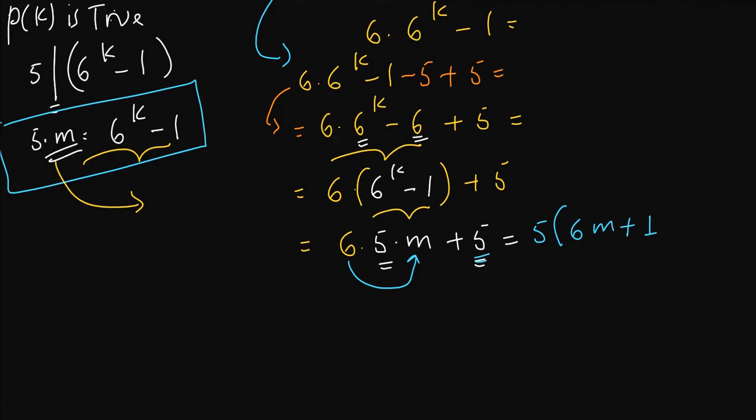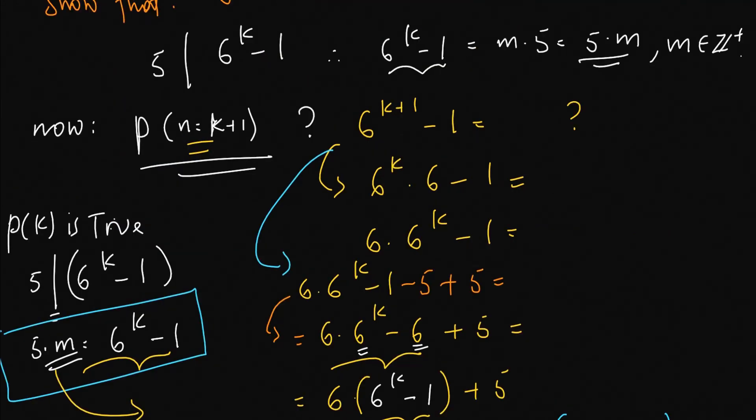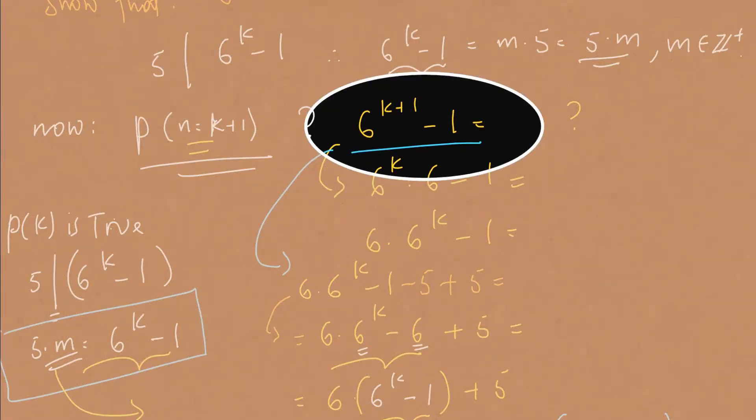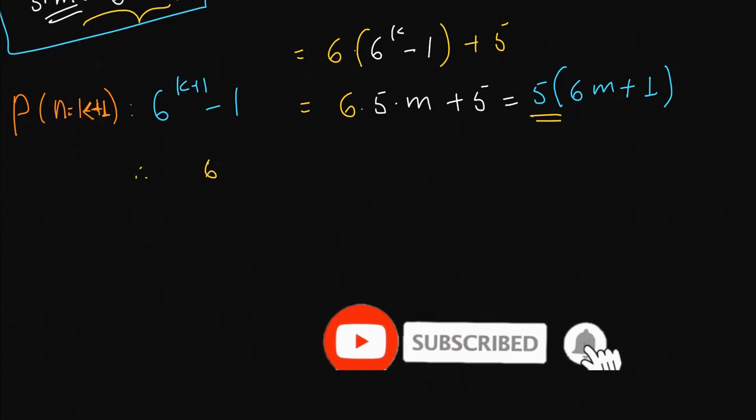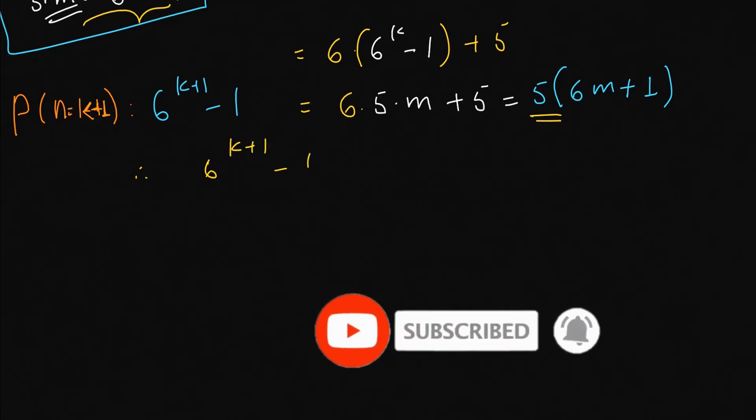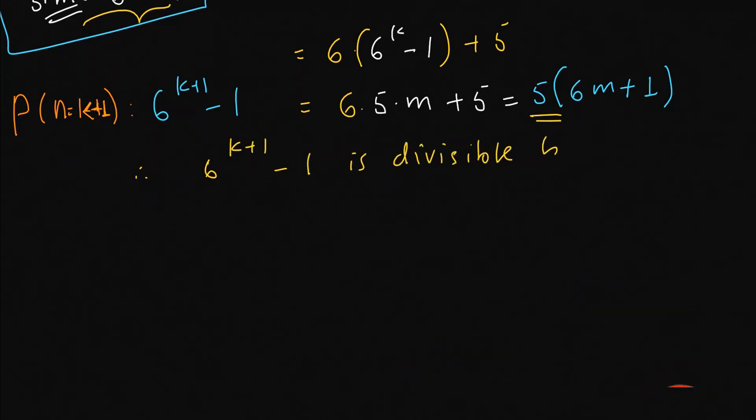Our number, which is 6 to the power of k plus 1 minus 1, you can see that this number is a multiple of 5. Therefore, you can conclude that 5 divides 6 to the power of k plus 1 minus 1.